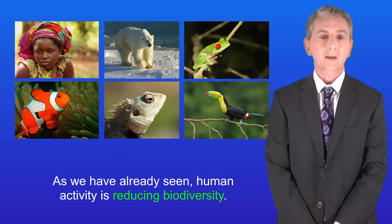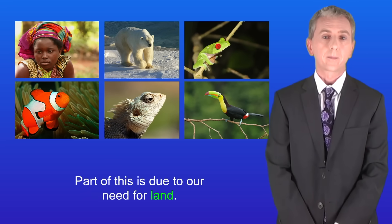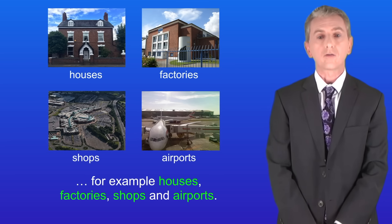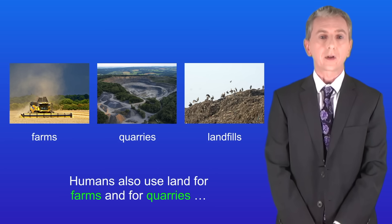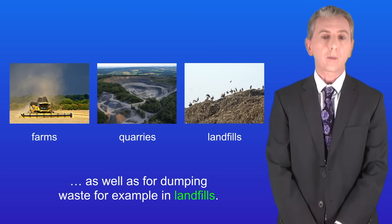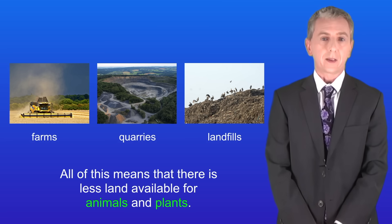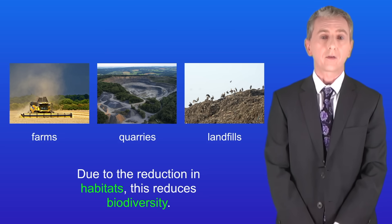As we've already seen, human activity is reducing biodiversity, and part of this is due to our need for land. Humans use land for buildings, for example houses, factories, shops and airports. Humans also use land for farms and for quarries, as well as for dumping waste, for example in landfills. All of this means that there is less land available for animals and plants, and due to the reduction in habitats, this reduces biodiversity.